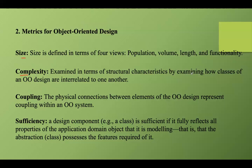Complexity can be examined by looking at how classes in an object-oriented design are interrelated to each other, which is known as cyclomatic complexity. You can also use weighted methods per class, which counts the number of methods in a class weighted by their complexity. Coupling refers to the physical connections between elements of object-oriented design. If coupling is low, it indicates better modularity and reduced interdependencies.